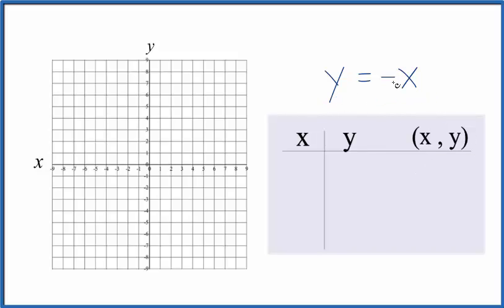So we're going to put a value in for x, let's say 0. So if x is 0, y equals negative 0, that's just 0.